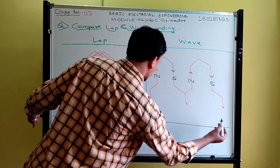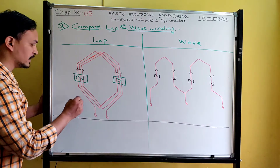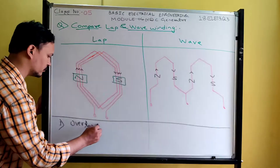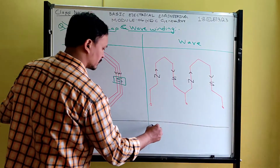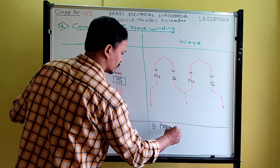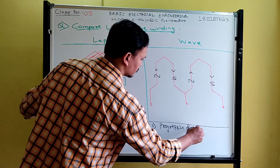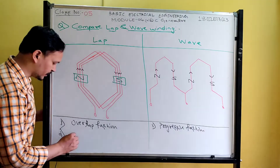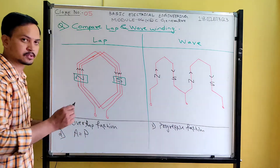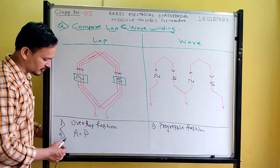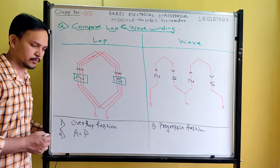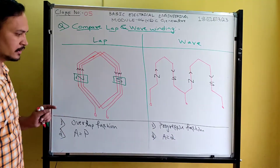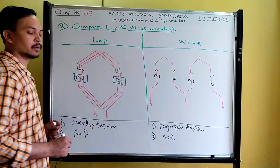These comparison points are very important. Point one: in lap winding, the winding arrangement is overlap fashion. In wave winding, the winding arrangement is progressive fashion. Point two, very important: in lap winding, the number of parallel paths A is equal to the number of poles. In wave winding, the number of parallel paths is equal to two only.